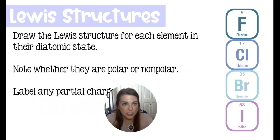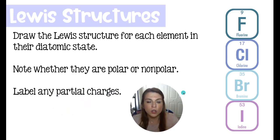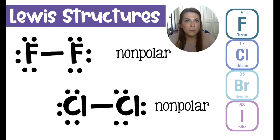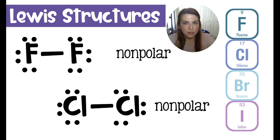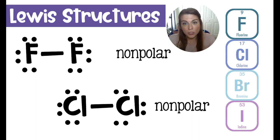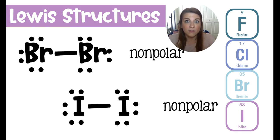Today we're going to talk about dispersion forces. To start out, you should draw the Lewis structure for each of these elements in their diatomic state. Note whether they are polar or nonpolar and label any partial charges. Because these elements are all members of the same group, their Lewis structures look very similar. Fluorine has six lone electrons, or three lone pairs, and one bonded pair — same is true for chlorine. Both are nonpolar. Bromine and iodine follow suit, listed here in order as they appear on the periodic table.